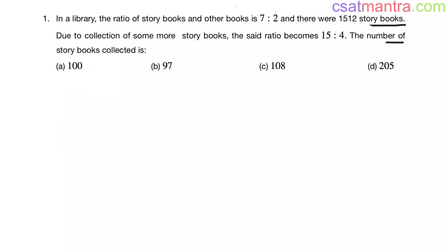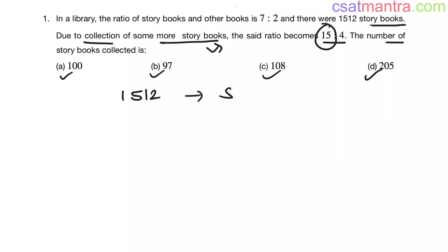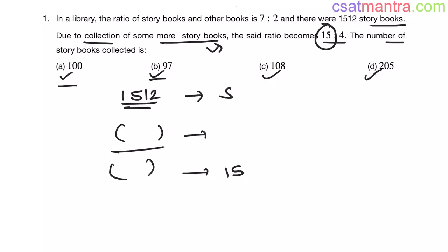Now let's solve this problem without using pen and paper, with the help of options only. Initially we have 1512 storybooks. After collection of some more storybooks, the said ratio became 15:4. That means the storybooks after collection should be a multiple of 15. The number of books collected will be option A, B, C, or D. So I am going to add each option to the initial number of storybooks and see if the total value is a multiple of 15.